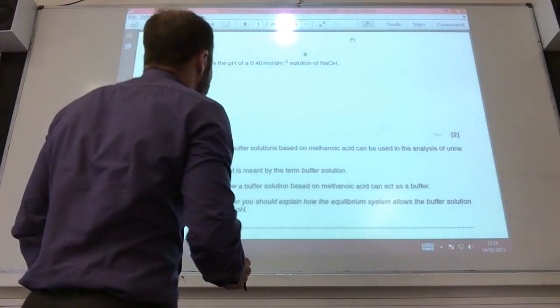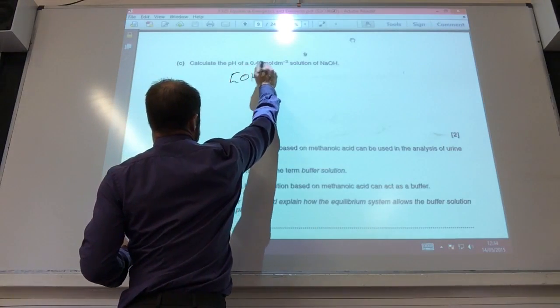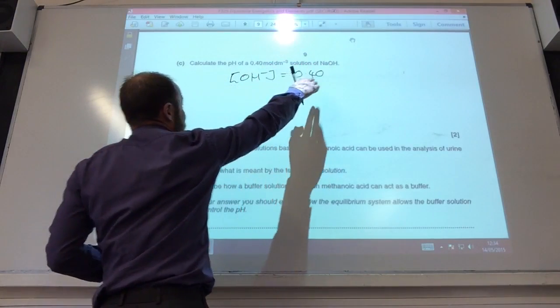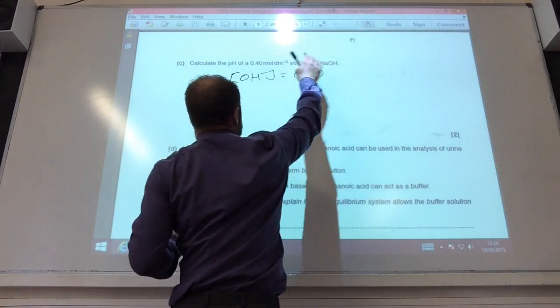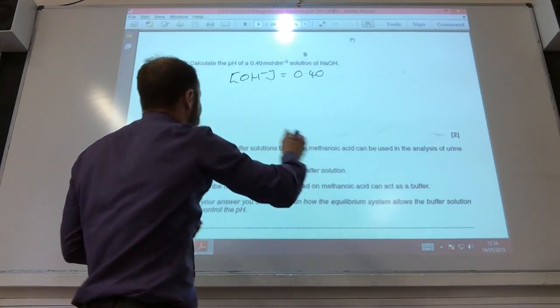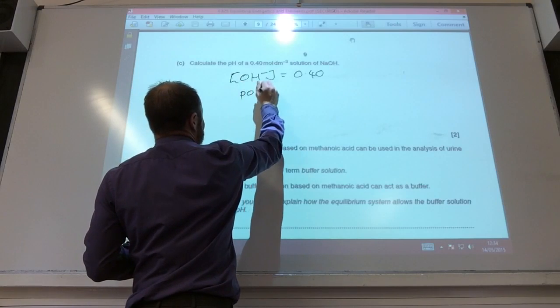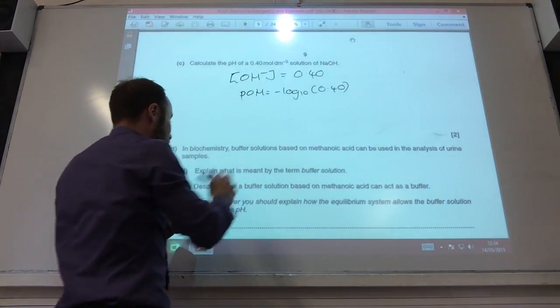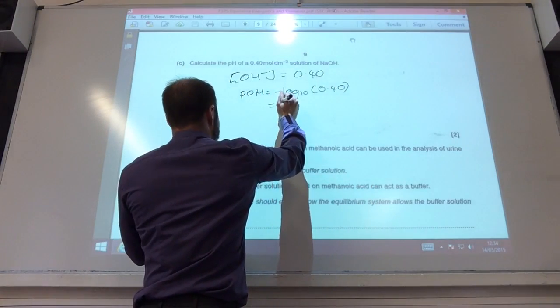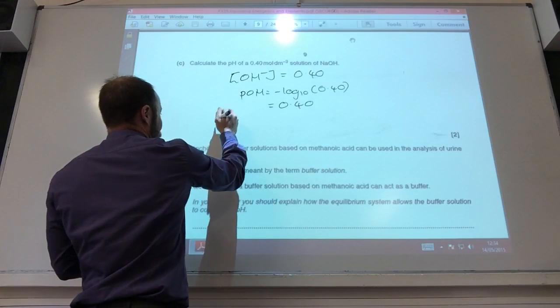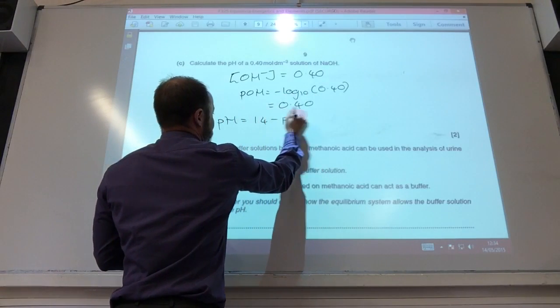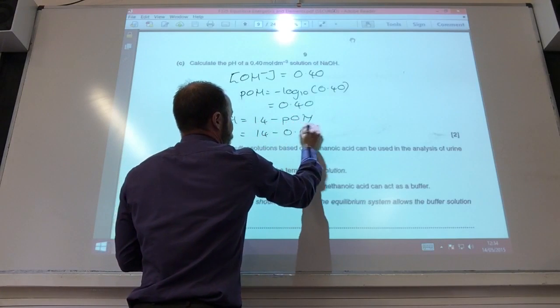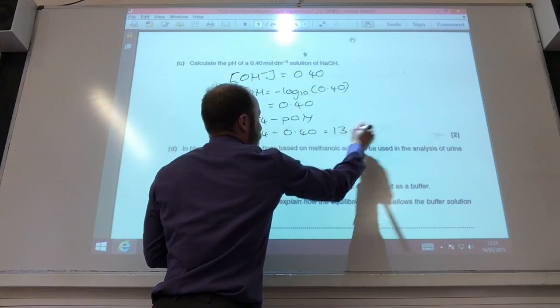We are going to find the pH now of a solution of sodium hydroxide. There are various ways to do this. Concentration of hydroxide is going to be the same as sodium hydroxide because 1 sodium hydroxide contains 1 hydroxide. So I can then find pOH as equal to minus log to the base 10 of hydroxide ions. That actually gives me 0.40. pH is then 14 minus pOH, so it's 14 minus 0.40 which gives me 13.60.